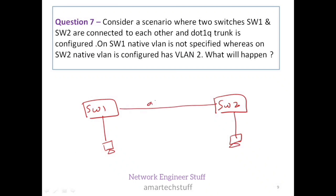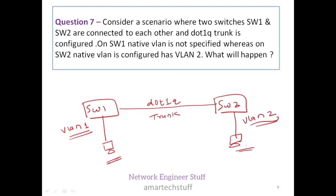A trunk is configured between these two switches using dot1Q. On Switch 1, the native VLAN is not specified, so it defaults to VLAN 1. On Switch 2, the native VLAN is configured as VLAN 2. Let's say the PC on Switch 1 and the PC on Switch 2 are both members of their respective switch's native VLAN — one is the sender, the other the receiver. When the sender PC sends traffic, Switch 1 forwards it on the trunk port.